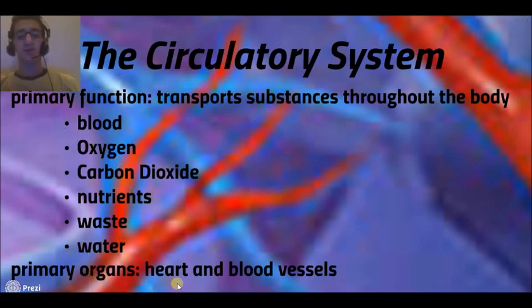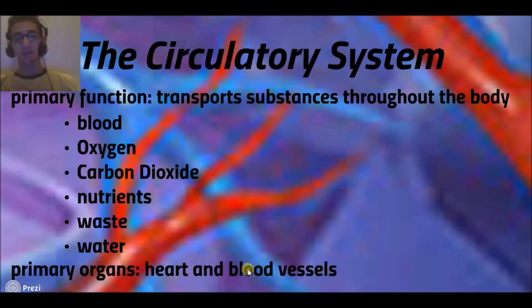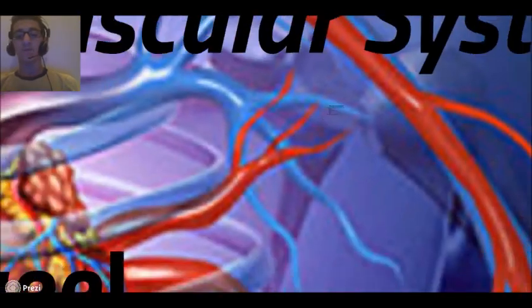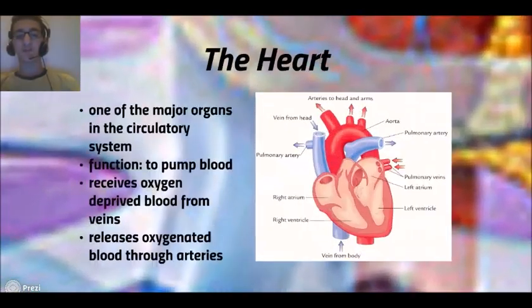The primary organs are the heart and blood vessels, because the heart is the one that pumps the blood and the blood vessels are the ones that carry the blood away to all parts of your body.